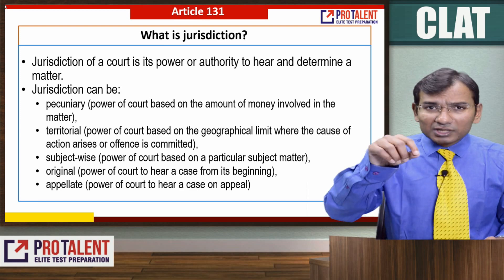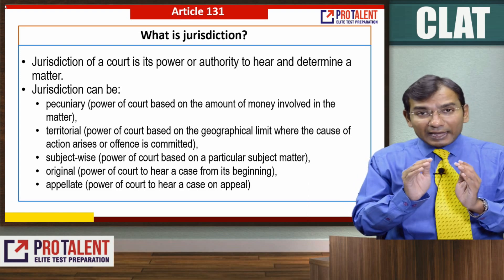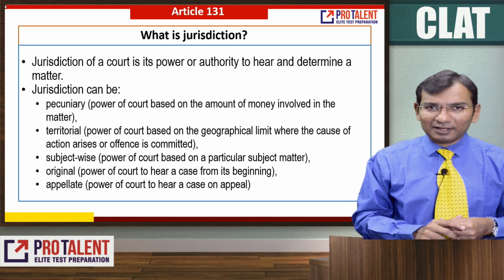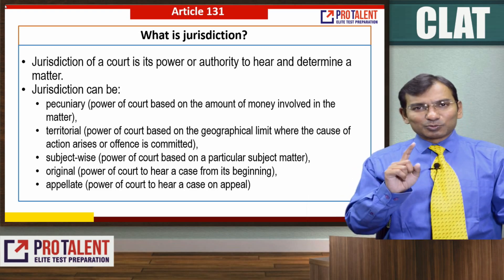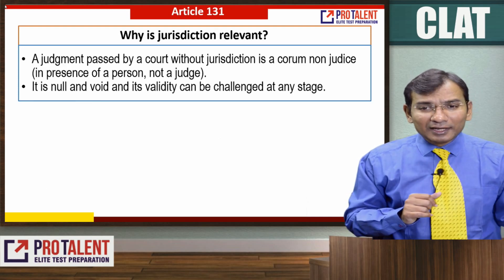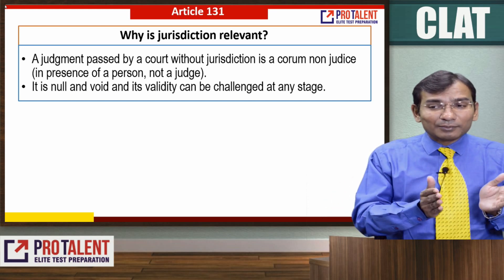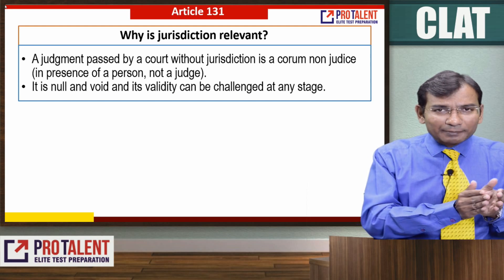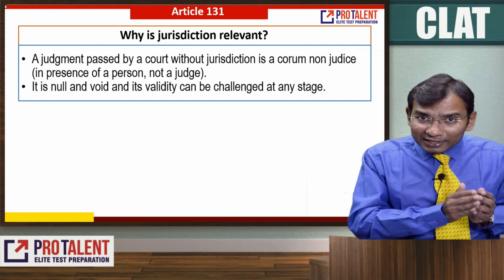Original jurisdiction means the power of a court to hear a case from its very beginning. So original jurisdiction ka matlab hai ki yeh particular matter isi court mein fall karta hai. Appellate is the power to hear a case on appeal. Now, a judgment passed by a court without jurisdiction is called coram non judice — meaning it is presented by someone who is not a judge in that capacity. Agar kisi court ka particular jagah pe jurisdiction nahi hai aur us court ne judgment de diya, toh maana jaata hai ki quorum bana hi nahi.